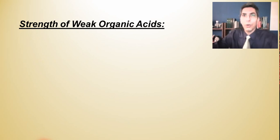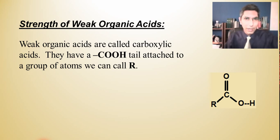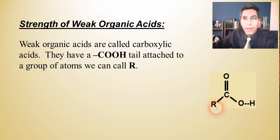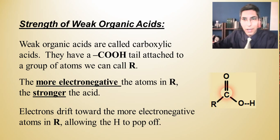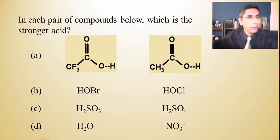One more rule covers the strength of weak organic acids, called carboxylic acids. These feature a carbon double-bonded to an oxygen and also single-bonded to an OH (hydroxyl) group, plus a group we call R. The more electronegative the atoms in the R group, the stronger the acid, because electrons drift toward those electronegative atoms and allow the H to pop off more easily.